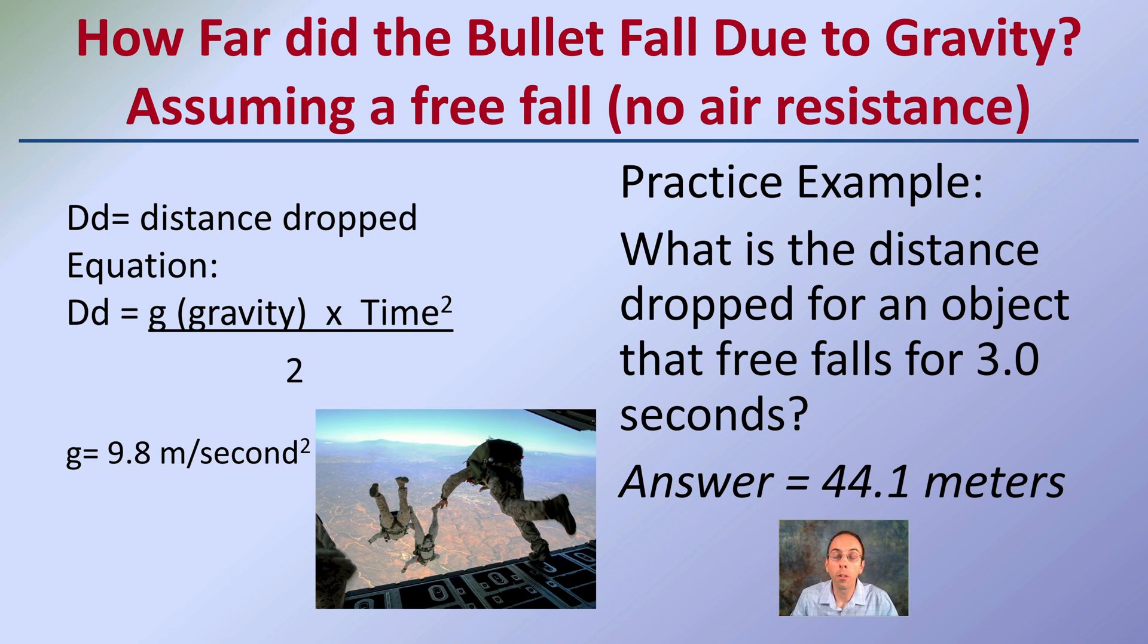Again, this is a free-fall assuming no air resistance to make the calculations relatively easy. In this case, the distance dropped (Dd) equals g (gravity) times time squared divided by 2.